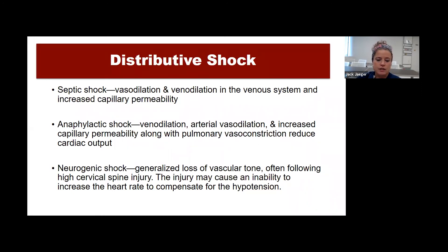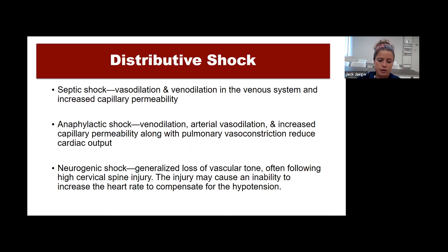In septic shock, there is vasodilation and venodilation with increased capillary permeability—the blood vessels lose tone and become leaky, so blood isn't staying where you want it. In anaphylactic shock, there is venodilation, arterial vasodilation, increased capillary permeability, and pulmonary vasoconstriction that reduces cardiac output—that child has a lot of things to correct. In neurogenic shock, there is a generalized loss of vascular tone usually following cervical spine injury, and the injury may not allow the heart rate to increase to compensate—making it especially dangerous and thankfully the least frequently seen.